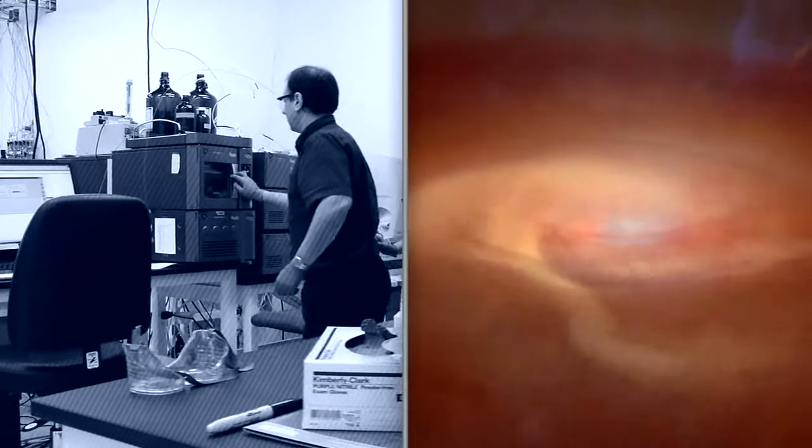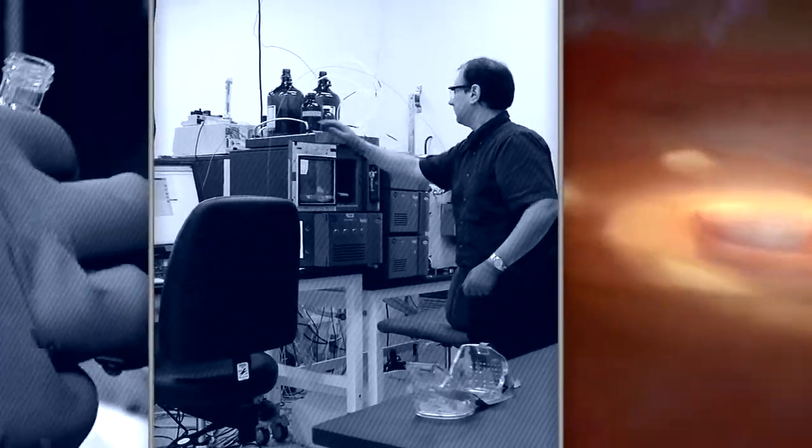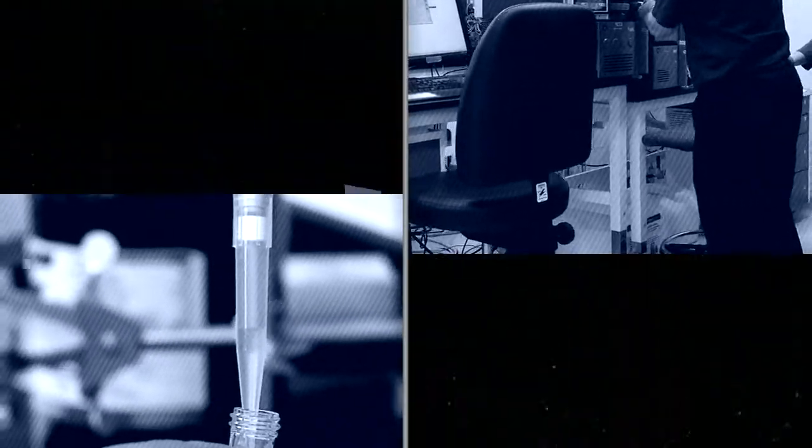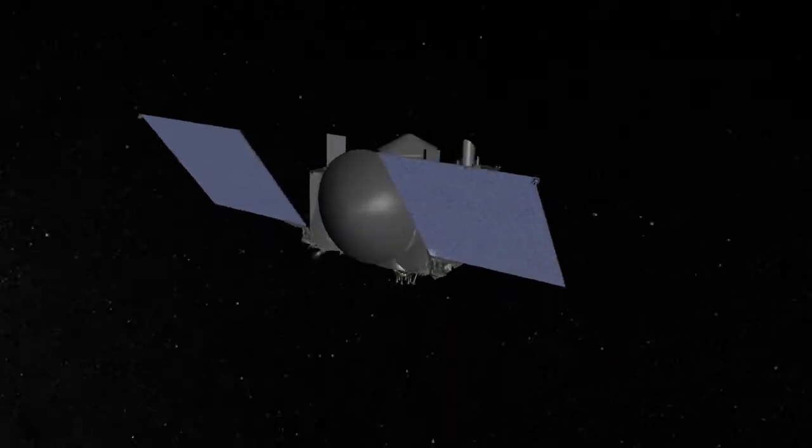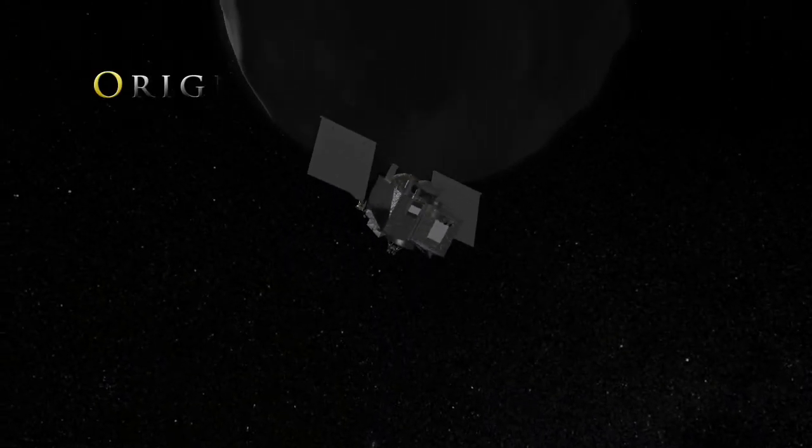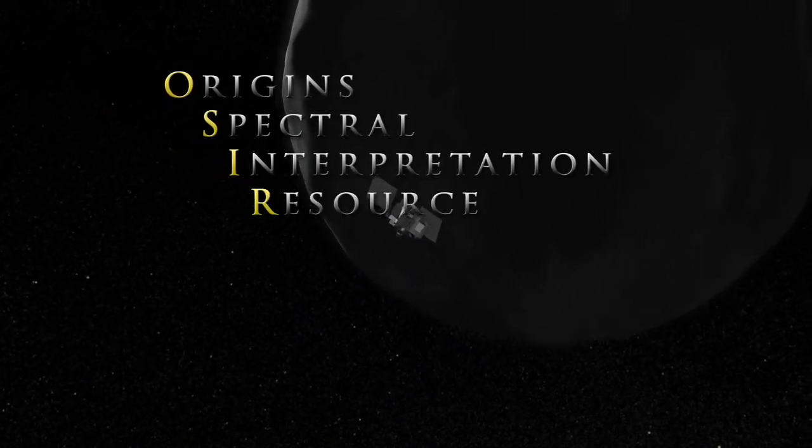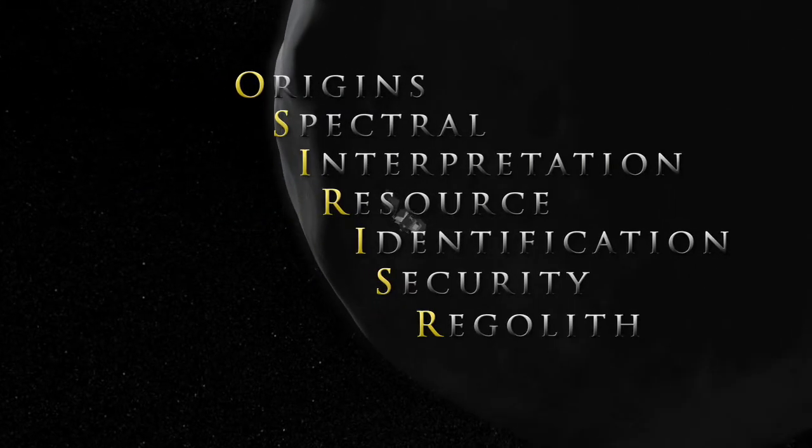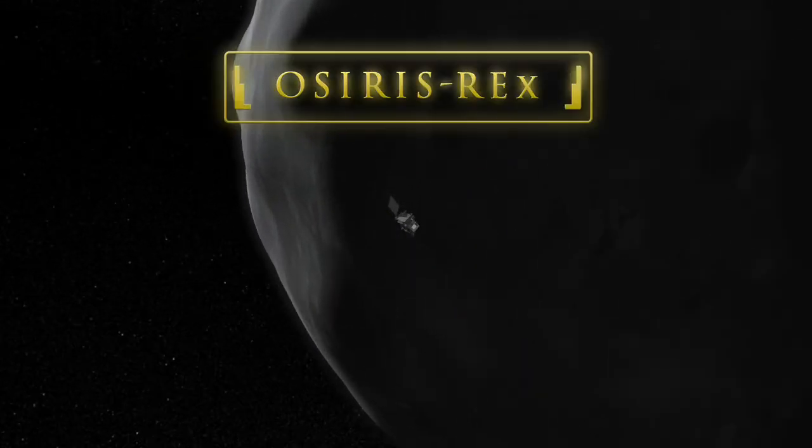If you want to study a piece of the early solar system in a lab on Earth, what do you do? To better understand the evolution of our solar system, NASA is sending the Origins Spectral Interpretation Resource Identification Security Regolith Explorer, or OSIRIS-REx.